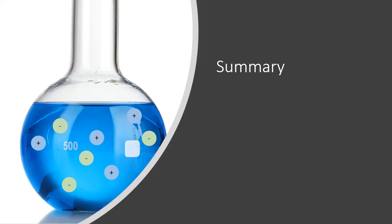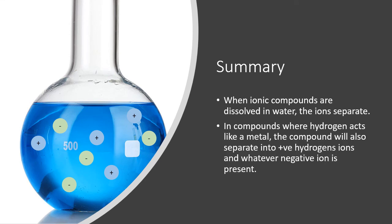So by way of summary, the main point here is when ionic compounds are dissolved in water, the ions separate. They break up. There are separate positive and negative ions floating around in the water. And we have to remember that certain hydrogen compounds behave in a similar way. Any compound whose name is hydrogen something, hydrogen chloride, hydrogen sulfate, and so on, when they dissolve in water, they will break up into positive hydrogen ions and whatever the negative ion happens to be.